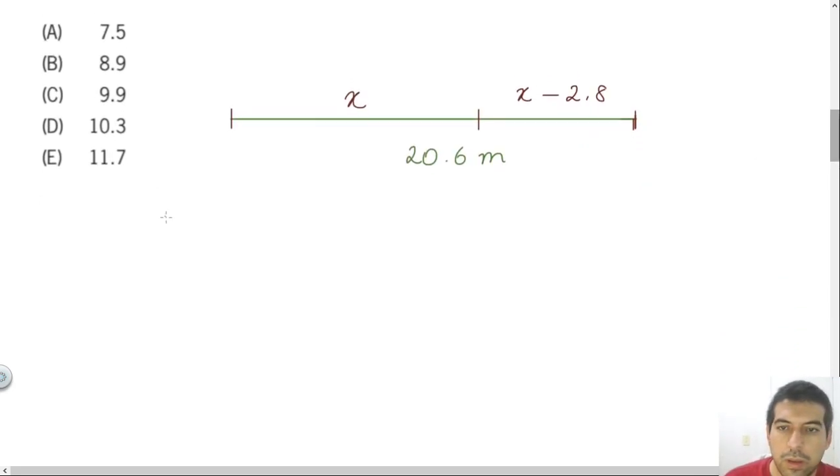So if you combine x plus x minus 2.8, it will be 20.6. So x plus x here will equal 2x minus 2.8, and this will equal 20.6.